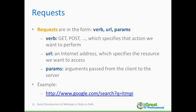In general, the verb encodes the kind of action we want to perform. The second element of a request is the URL — an internet address that specifies the resource we want to access on the server and the code we want to execute. The third element, the parameters, is the list of arguments passed from the client to the server — for instance, when we need to submit some data or change the behavior of the web app according to our input. This structure is the same for any URL accessed on the web. Below you find an example of a request.